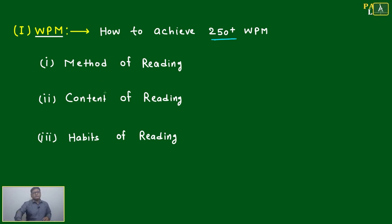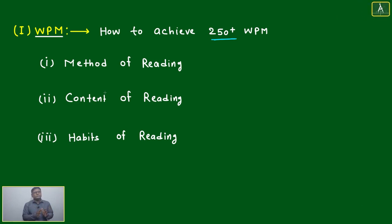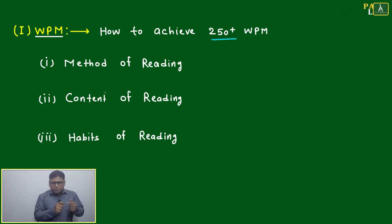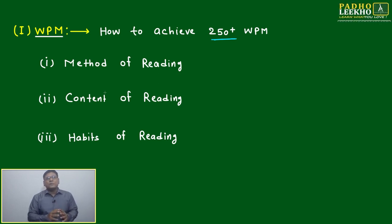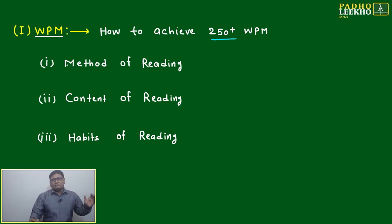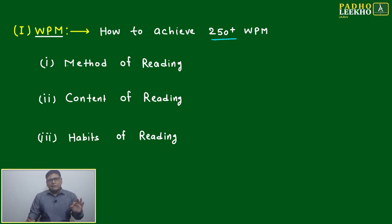The first area is method of reading. If you are a poor reader, one thing is sure — we are not reading properly. Our method is having some problem. If we are not able to do anything properly, that method has some problem. Don't worry, these are very concrete techniques, not theoretical techniques that you cannot apply.